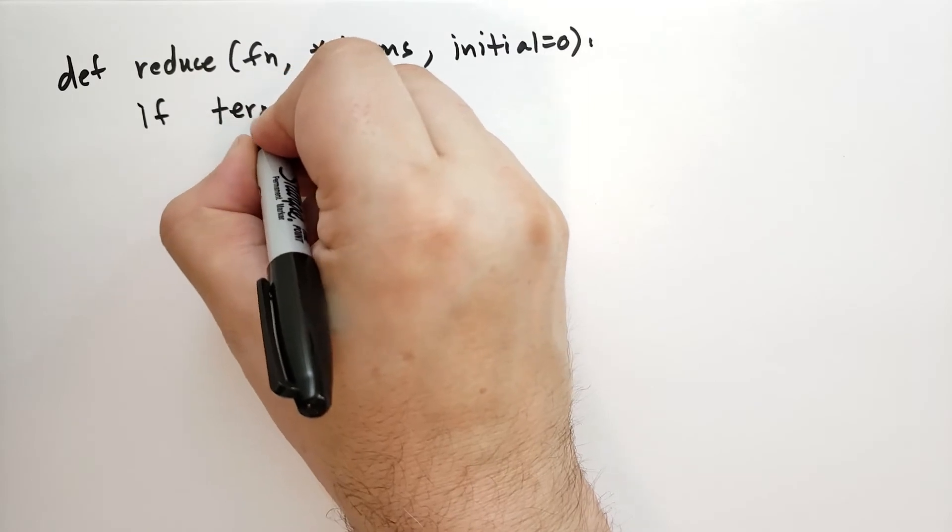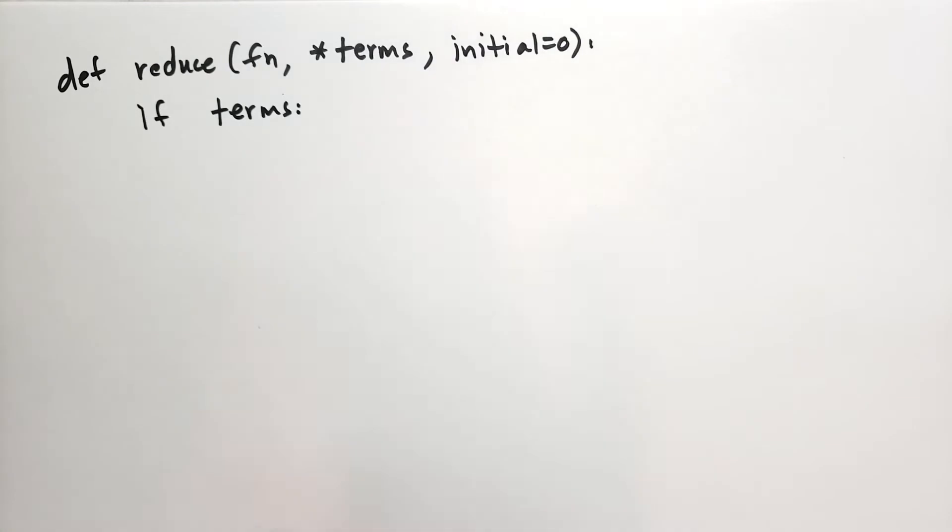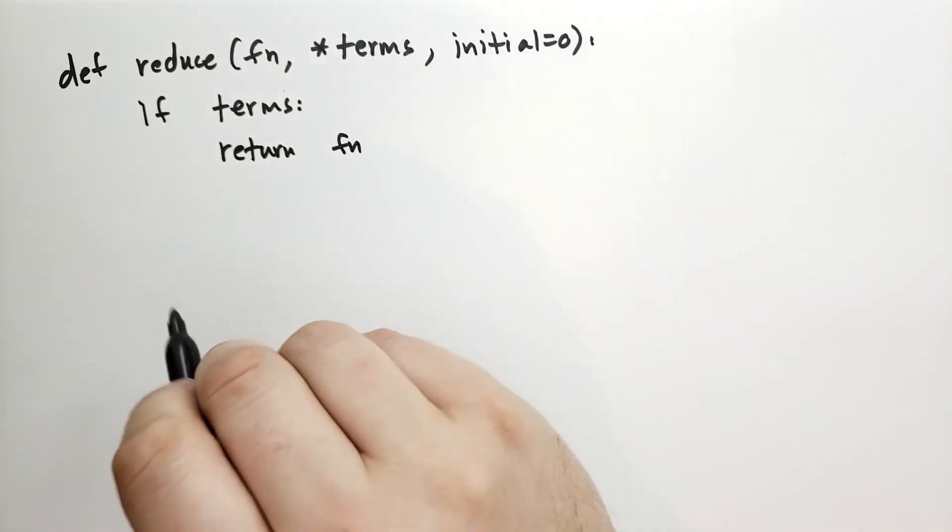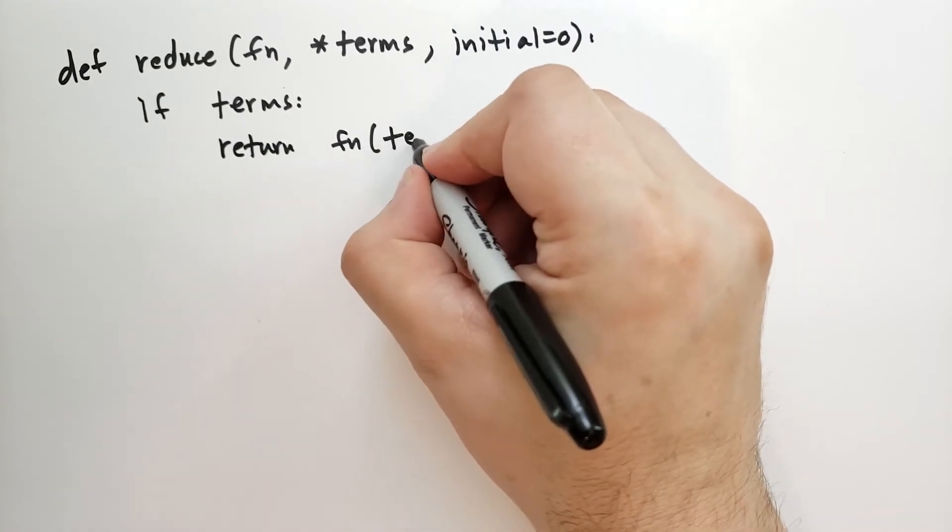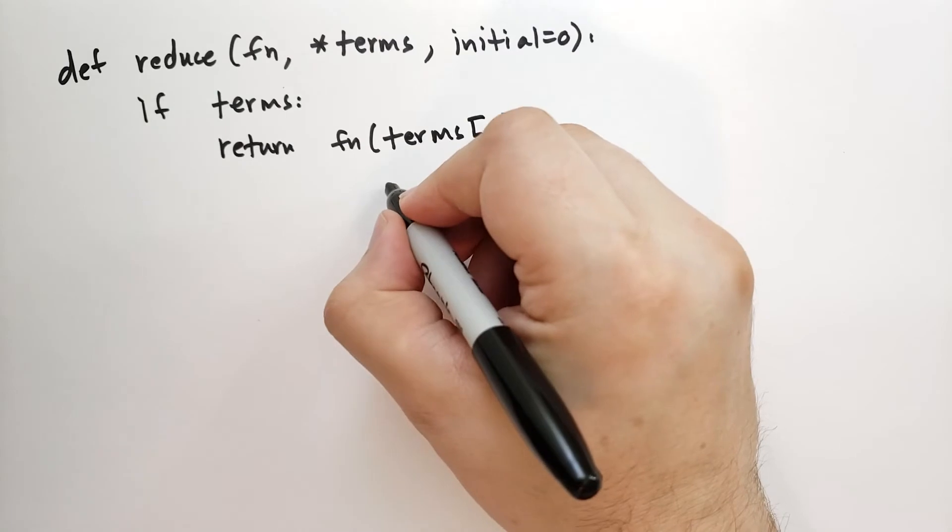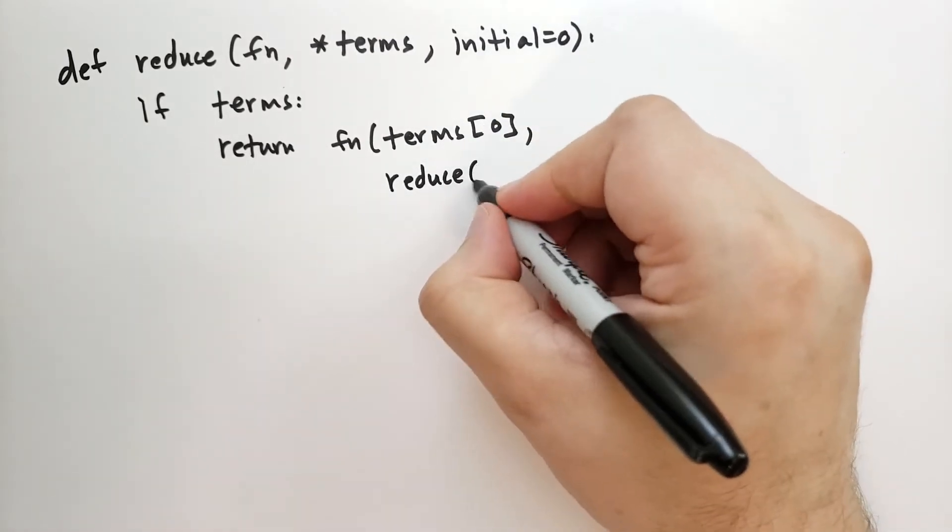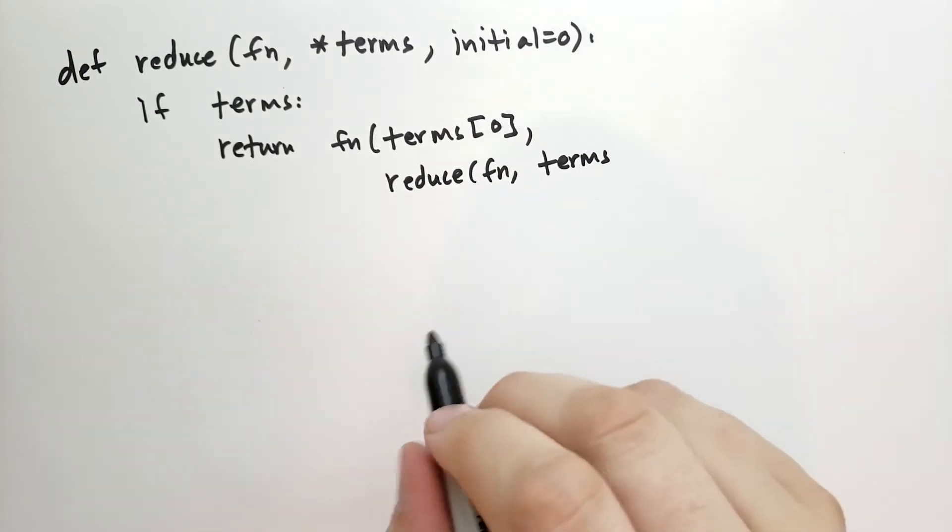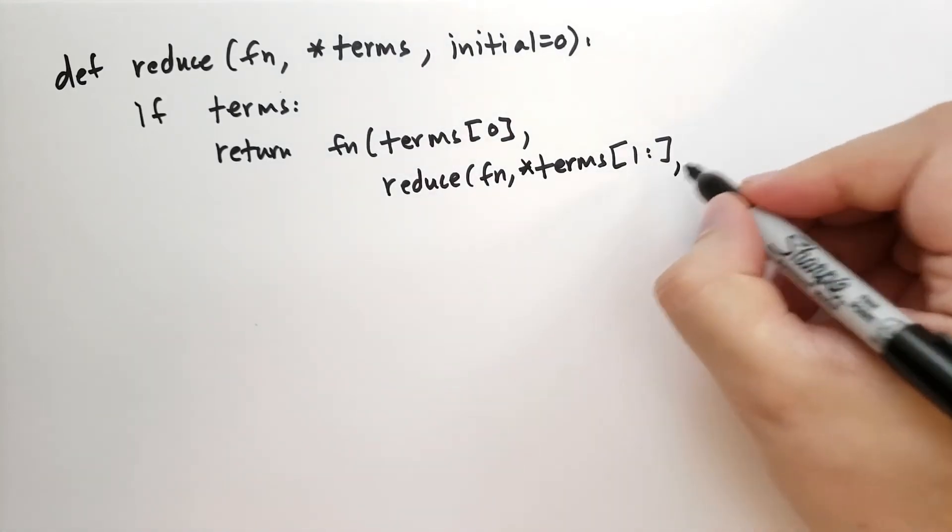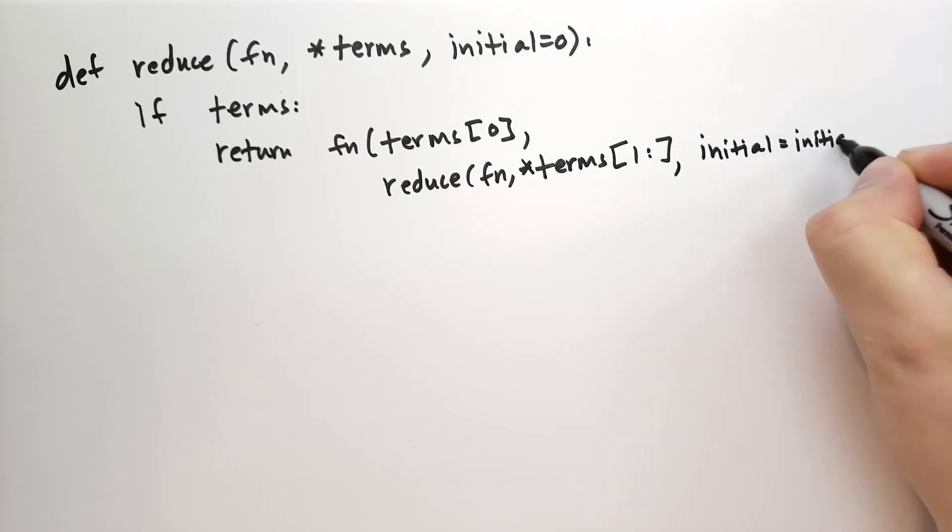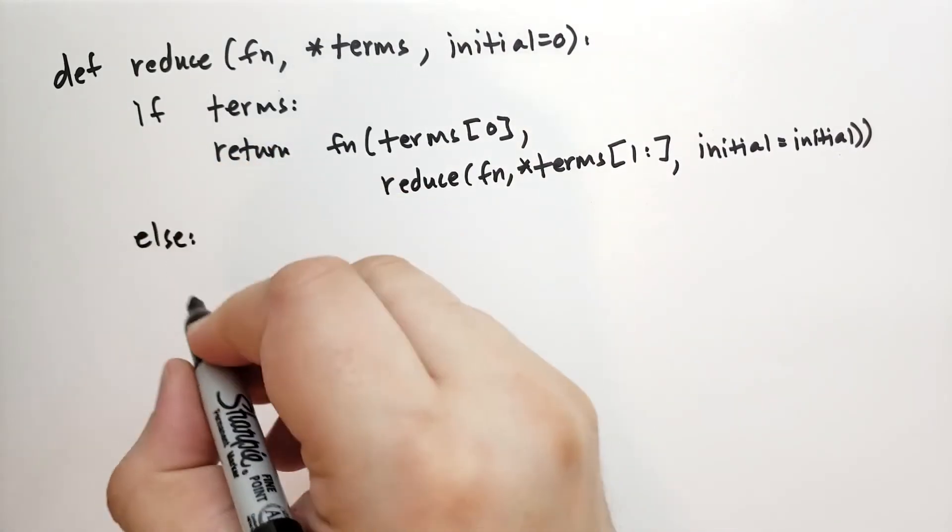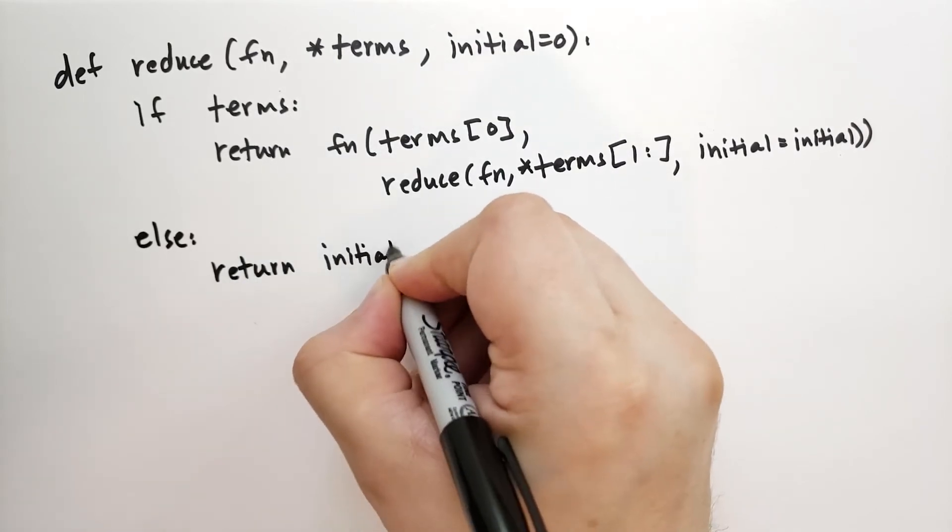If there are any terms left, and in Python an empty tuple is false but any other tuple is true, then we're going to return the function where the first item is element 0, the first element of terms, and the other item is the reduced form of that function. And then we're going to take a slice of terms starting at the second element going to the end, and we're going to unwrap that, and we're going to keep the initial value. If there are no more terms left, then we're just going to return the initial value.